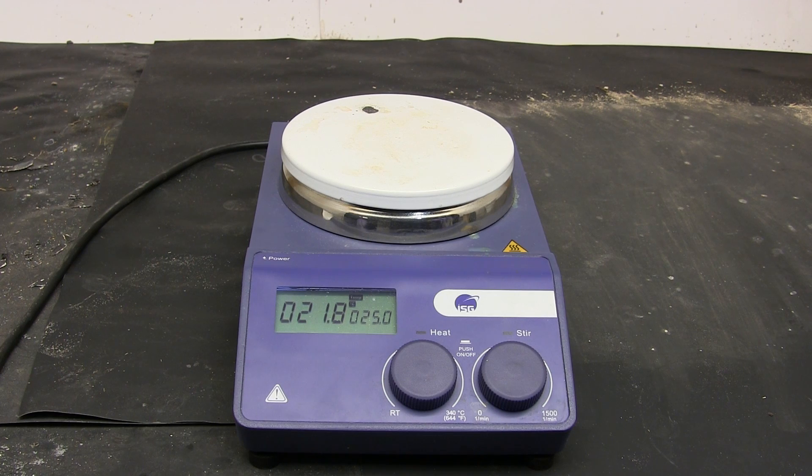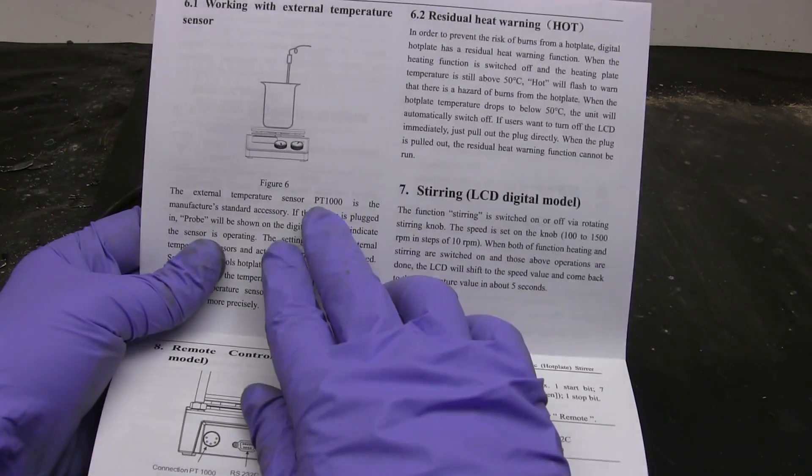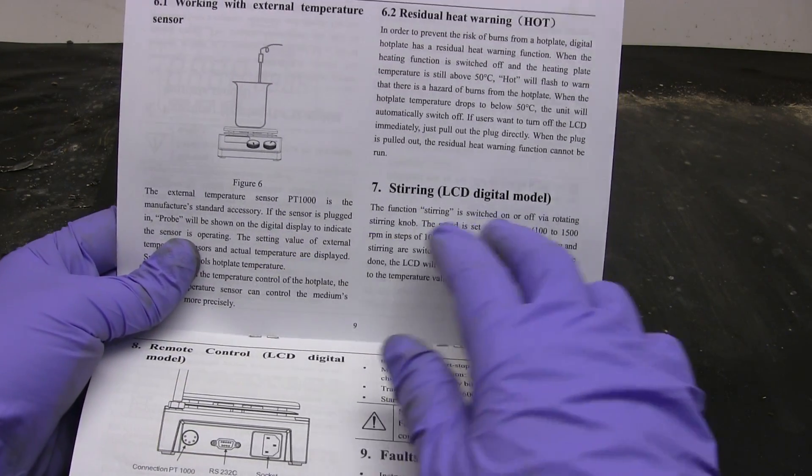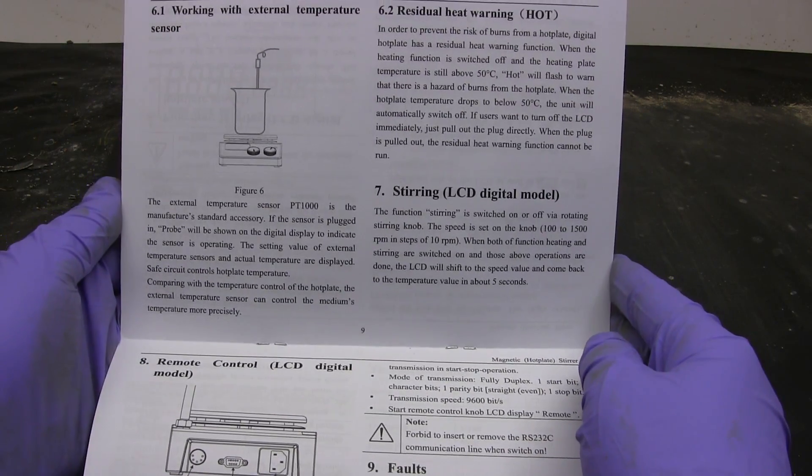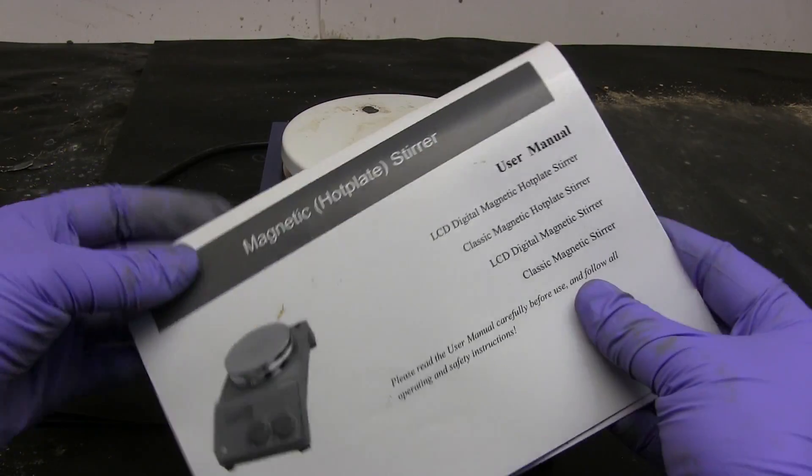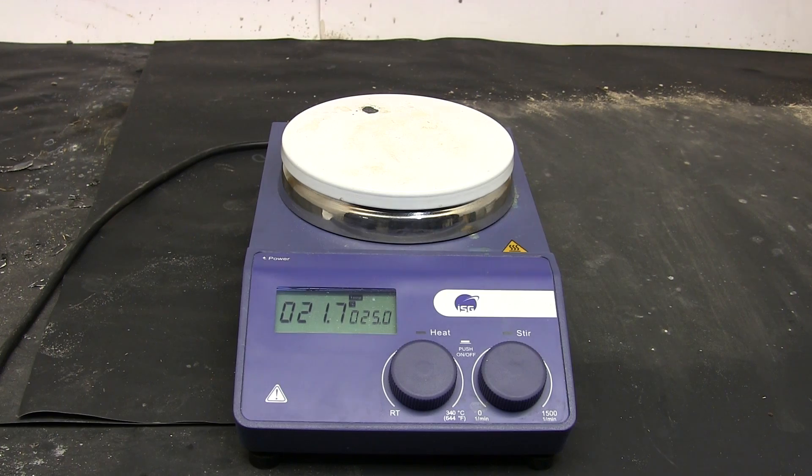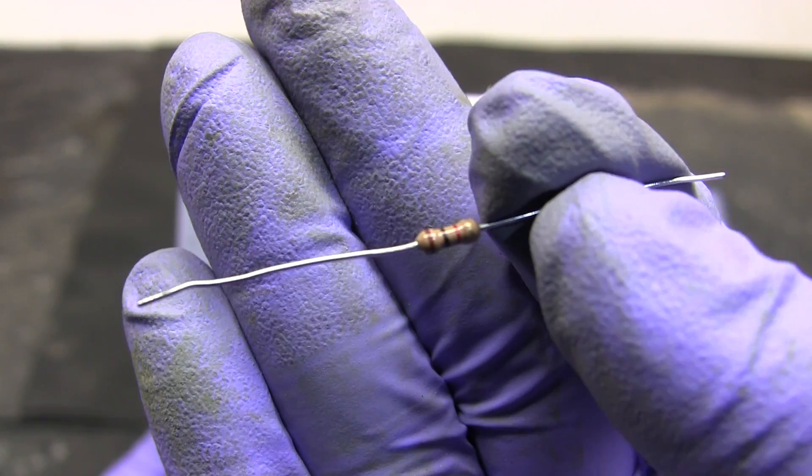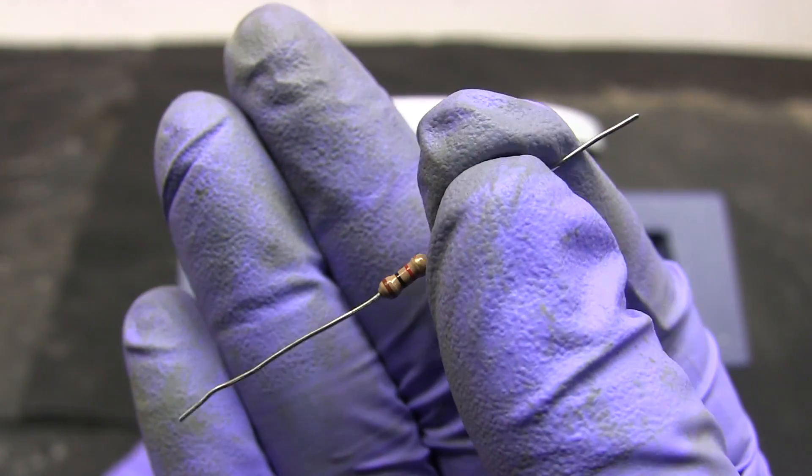So how do we go about making our own thermometer probe? Well first we need to know what type of element it uses. A big hint is right in the manual. It calls it a PT1000 sensor element. Now this just might be a coincidence but PT1000 could mean it uses a platinum resistance element with a resistance of 1000 ohms at 0 degrees Celsius. To be certain I'm going to test it by sticking this 1000 ohm resistor into the thermometer probe port.